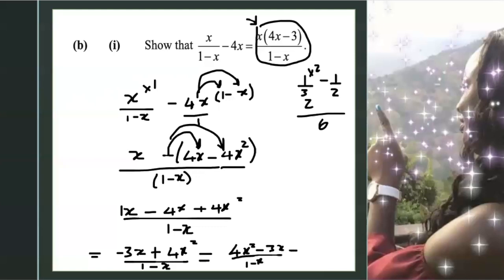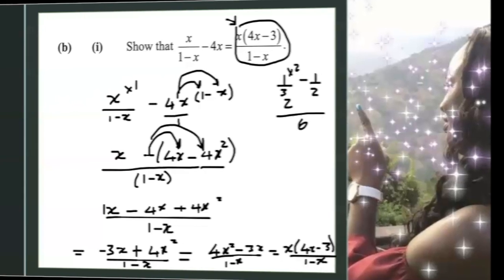Finally, we factor out what's common. x is common in the numerator. So what we're left with is x(4x - 3) all over 1 minus x. And as you can see, it's proven.